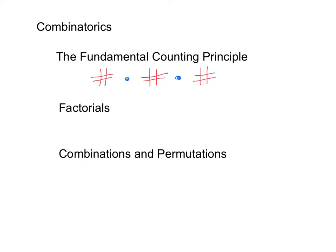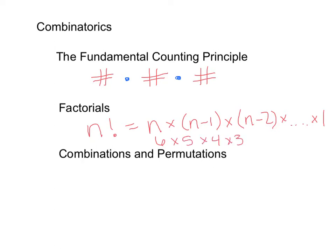Factorials refer to the number of ways that you can arrange a given set of objects. So that would be, I have six books, how many different ways can I arrange them? What you would do is six factorial. That just basically means that number times the number one less than it, times the number one less than that one, and so on until you get down to one. So for six, it would be six times five, times four, times three, times two, times one. That would be six factorial.